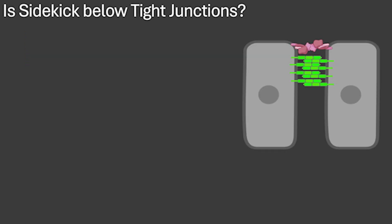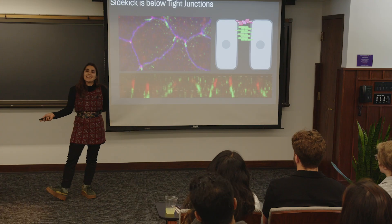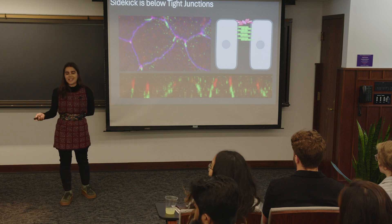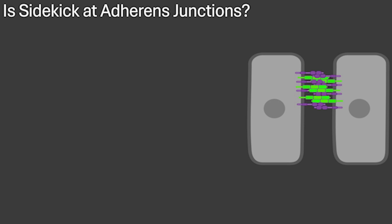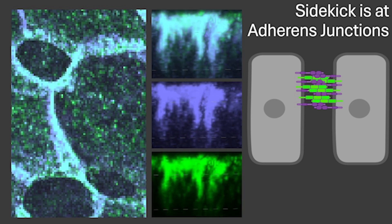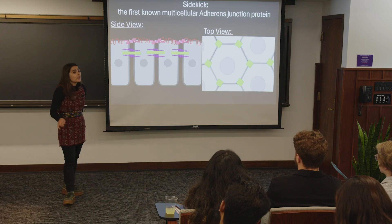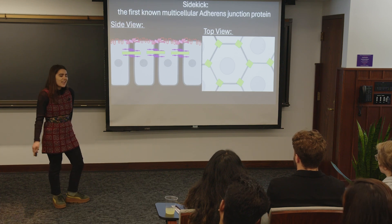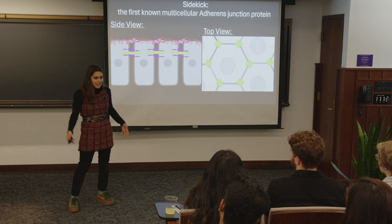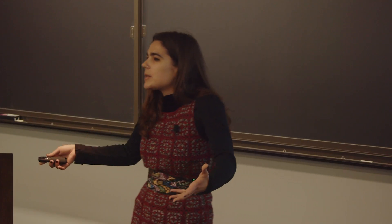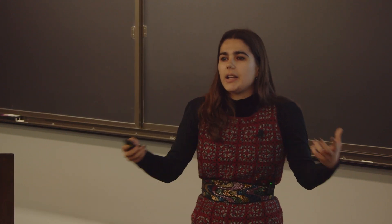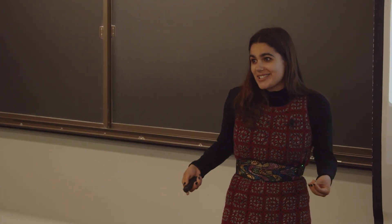The next question is: is sidekick below tight junction proteins? If we look at the top of the skin — yes, it's looking like it. If we look at the side — yes, we see those green long pieces of the sidekick protein underneath the red tight junctions. And is it at adherence junctions, co-localizing with the purple proteins? Looking at the top — looks like it. Looking at the side — very much so. My preliminary data suggests that sidekick is the first known adherence junction protein specific to multicellular junctions. You might be thinking, why is this cool? This could help us understand how cancer metastasizes or how we fight inflammation disorders. But what's really cool to me as a fundamental biologist is that we're finding new things about what holds us together and makes us come together. Thank you so much for your attention.